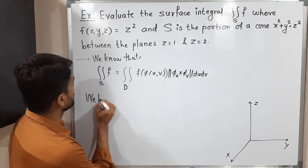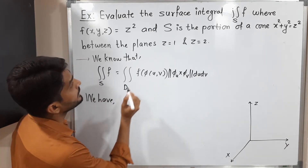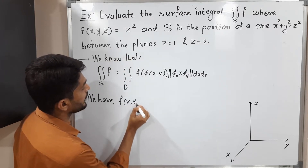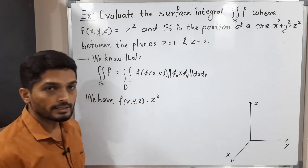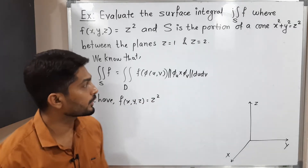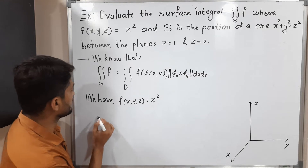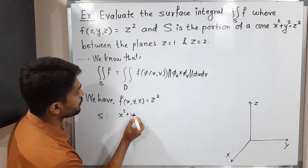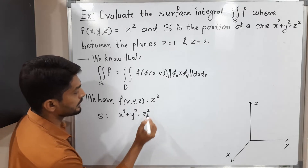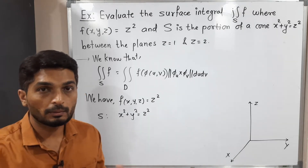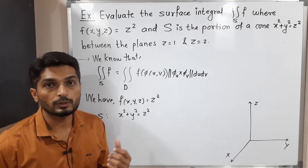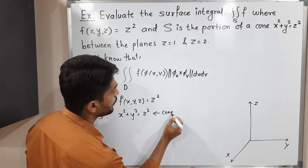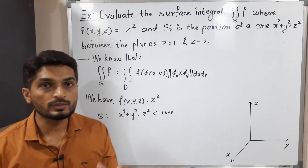So what we have: the function is z squared — F(x, y, z) is equal to z squared. Now let us consider the given surface S, which is x squared plus y squared is equal to z squared. They have mentioned it is a part of a cone. This is the equation of a cone around the z-axis.